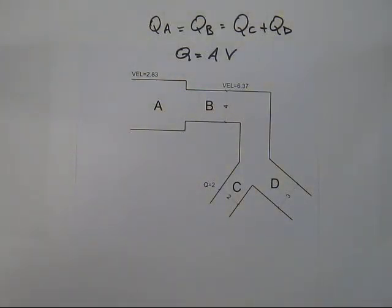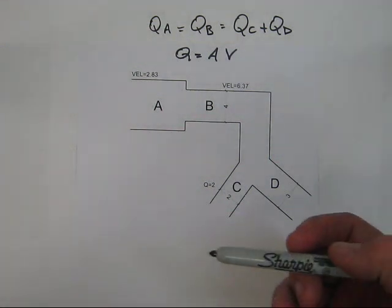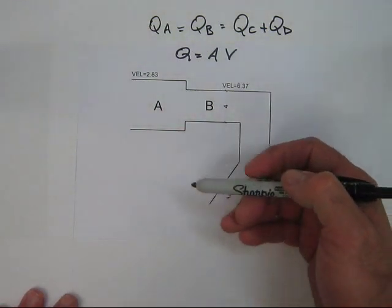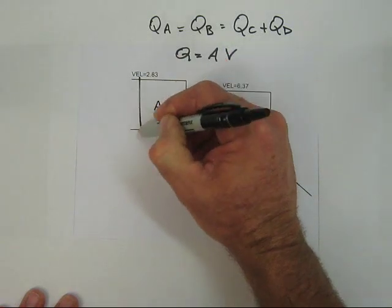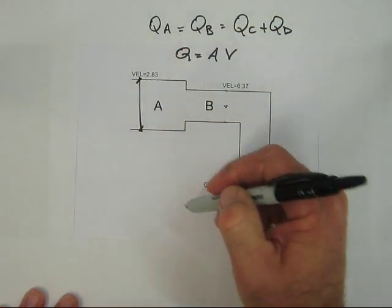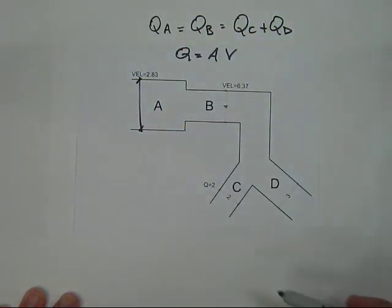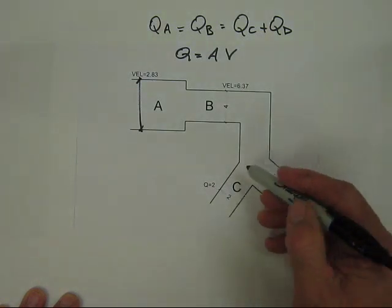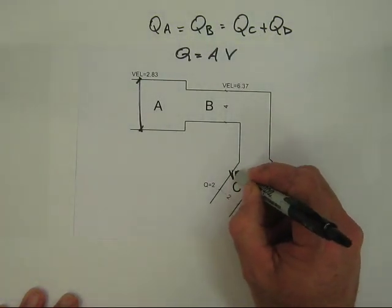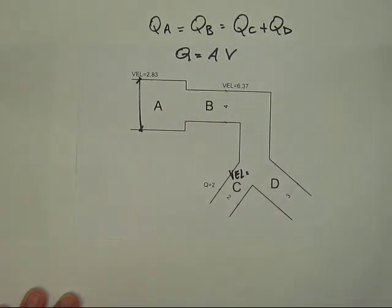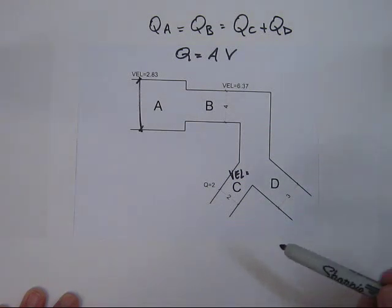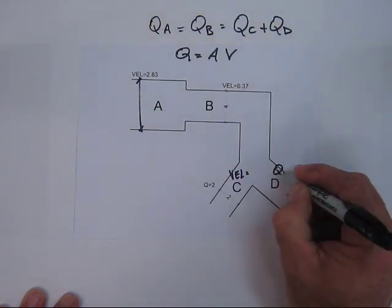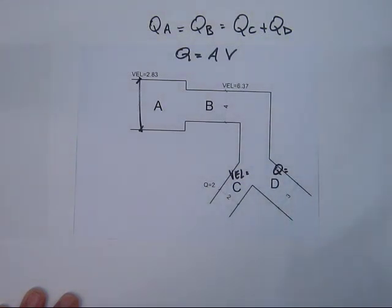Given this information in the diagram, we're asked to find the diameter at A, the velocity at C, and the flow rate at D.